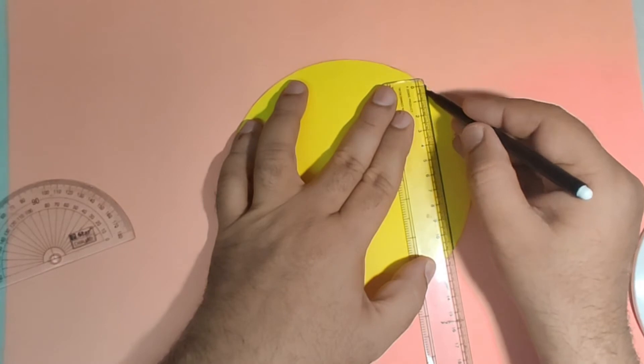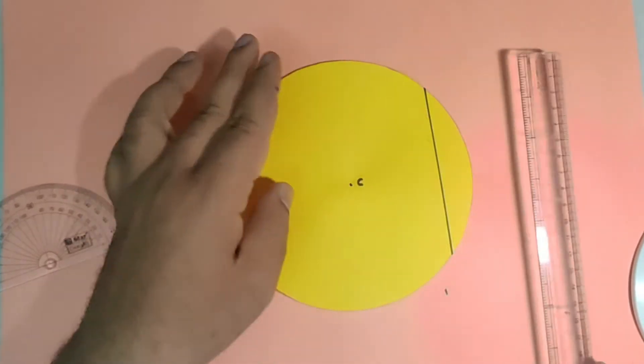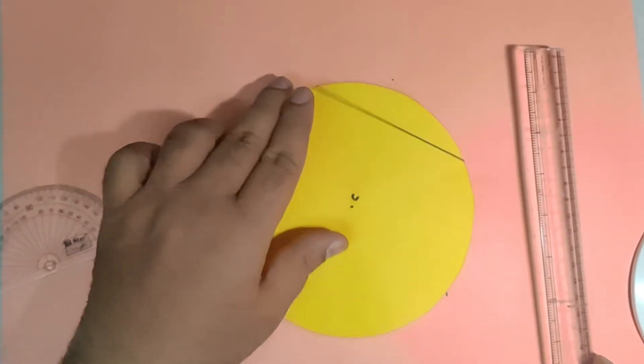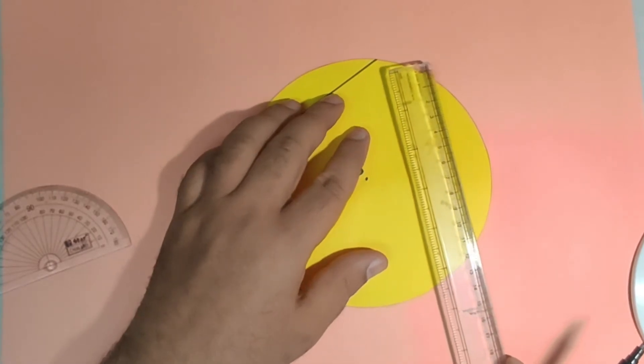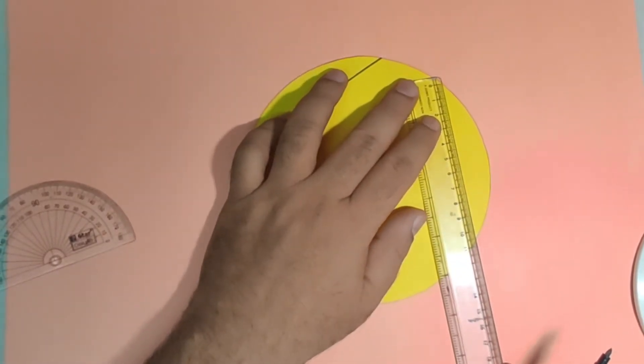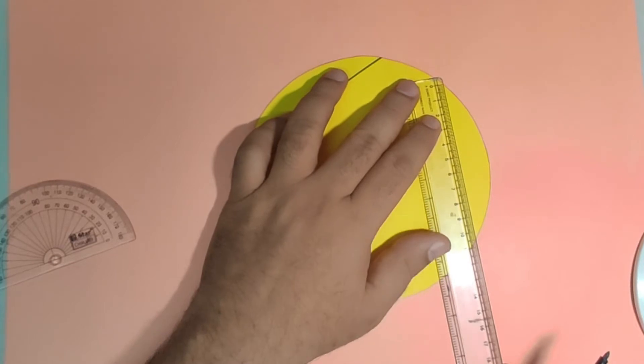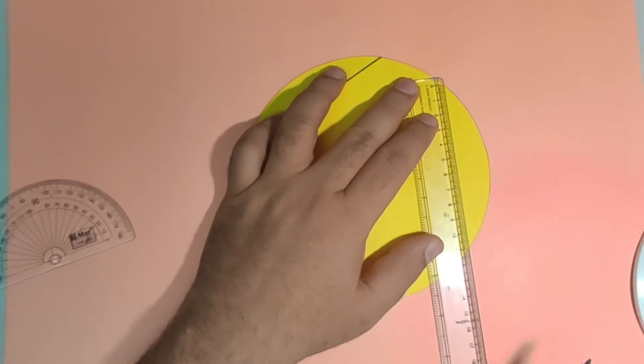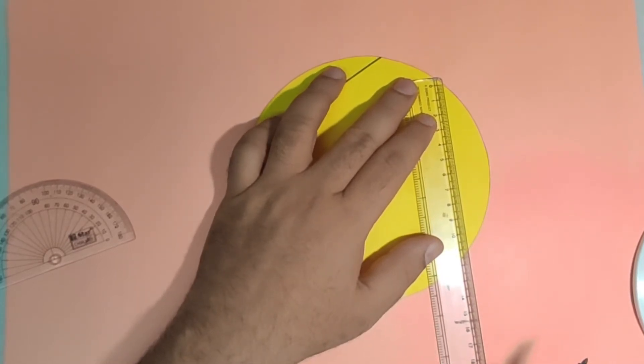So this chord is of 11 centimeter. Let us take another chord somewhere else on the circle of the same length, that is 11 centimeter.